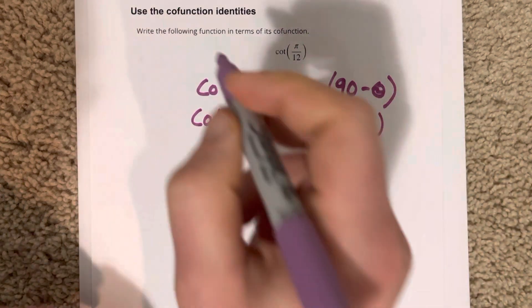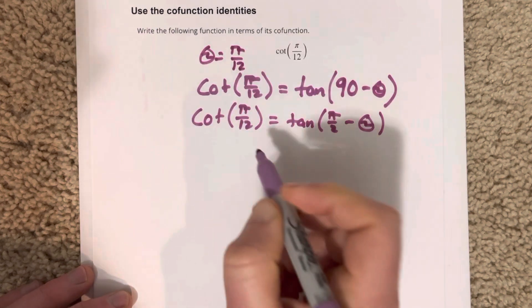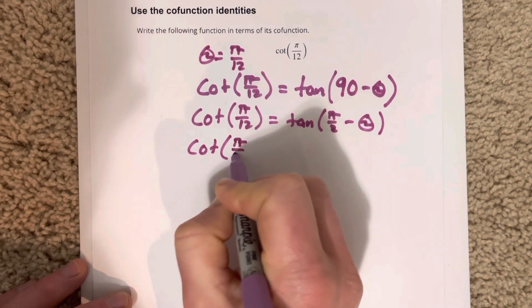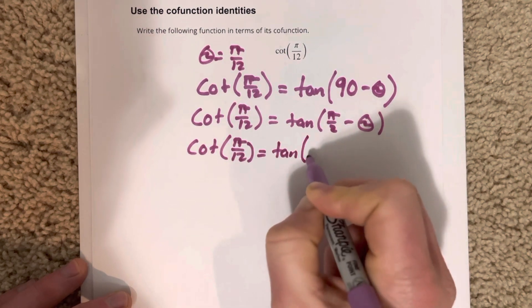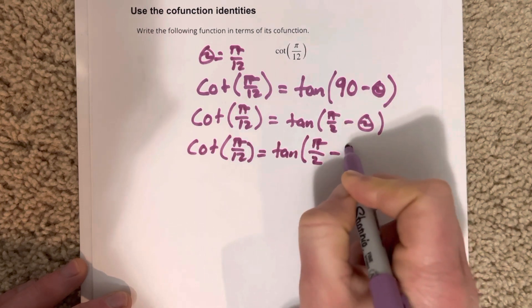Well, they tell us theta right here. We know that theta is actually pi over 12 right now. So we're going to write this as cotangent pi over 12 is equal to tangent of pi over 2 minus pi over 12.